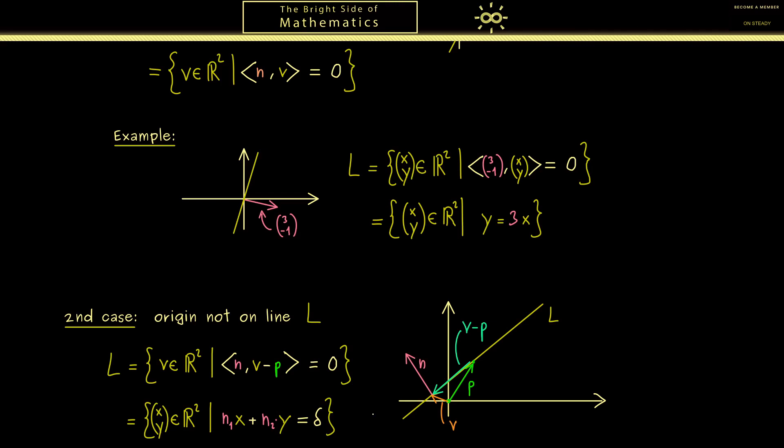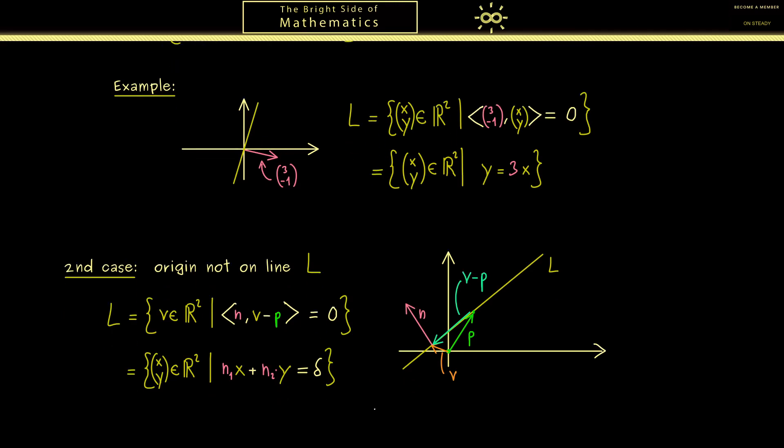And now this constant delta is just the inner product N with P. We say it's a constant because it does not depend on the numbers x and y; it's just the number that comes from the line L. So in summary, you should see with only three numbers N1 and N2 and delta, we can describe a whole line L in the plane.